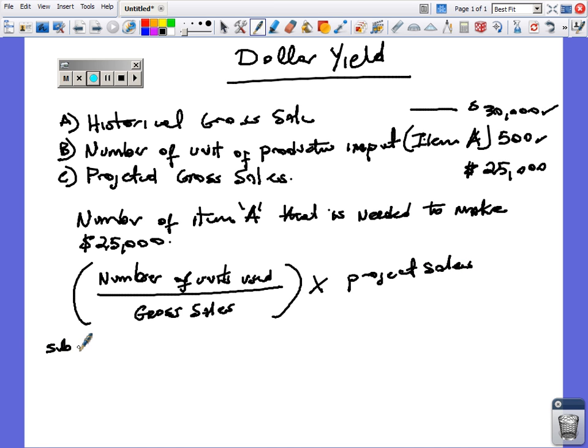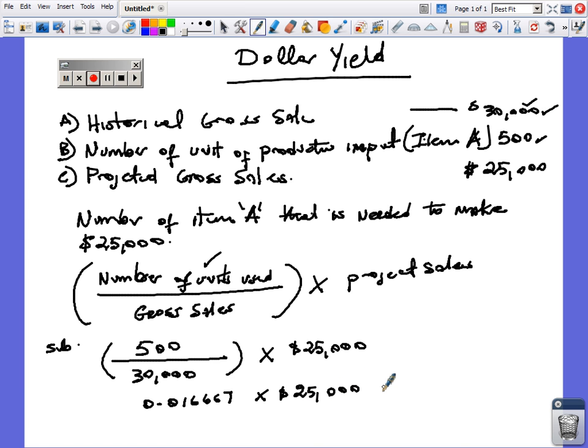Let's substitute. Number of units 500 divided by gross sale $30,000, multiplied by our projected sale of $25,000. Let's do this in steps. 500 divided by 30,000 gives us 0.016667, times our projected gross sale of $25,000.